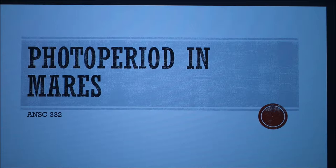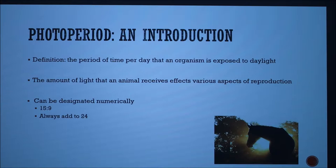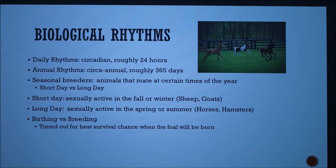Today I'm going to be talking about photoperiod in mares. First, you have to understand what photoperiod is. The definition is the period of time per day that an organism is exposed to daylight. The amount of light that an animal receives affects various aspects of reproduction. Photoperiod is designated numerically — for example, 15-9 means 15 hours of daylight to 9 hours of darkness, and it will always add up to 24.